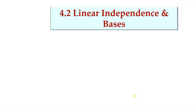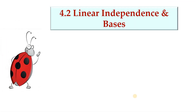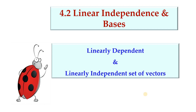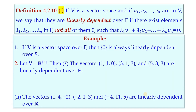In this video, in section 4.2, we are going to cover definitions, examples, and results on linearly dependent and linearly independent sets of vectors. First, we have the definition of linearly dependent vectors. If V is a vector space and v1, v2, ..., vn are in V, we say that they are linearly dependent over F.